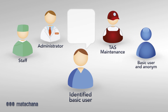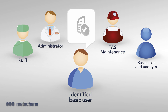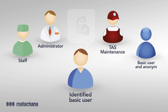Identified Basic User provides the same information as the previous level, but additionally it can be used to identify the user who starts and confirms the end of the cycle. This information will be printed in the report at the end of the cycle.